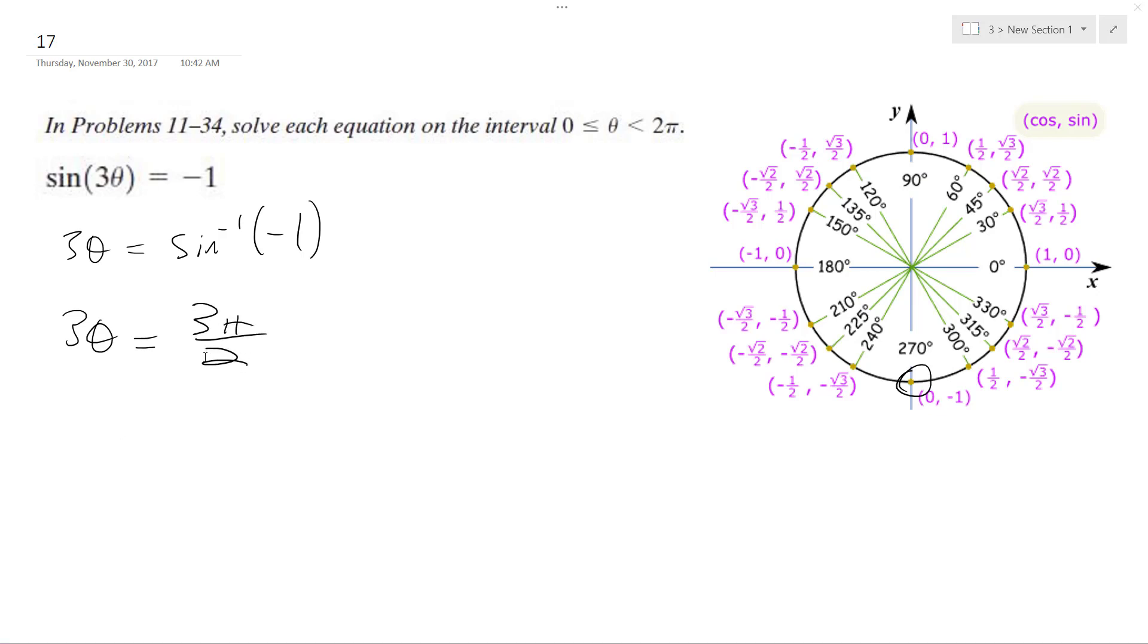Now what we're going to do is divide through by the coefficient 3 here. So we're going to get theta equals... this ends up being 3 pi over 6, which equals pi over 2.